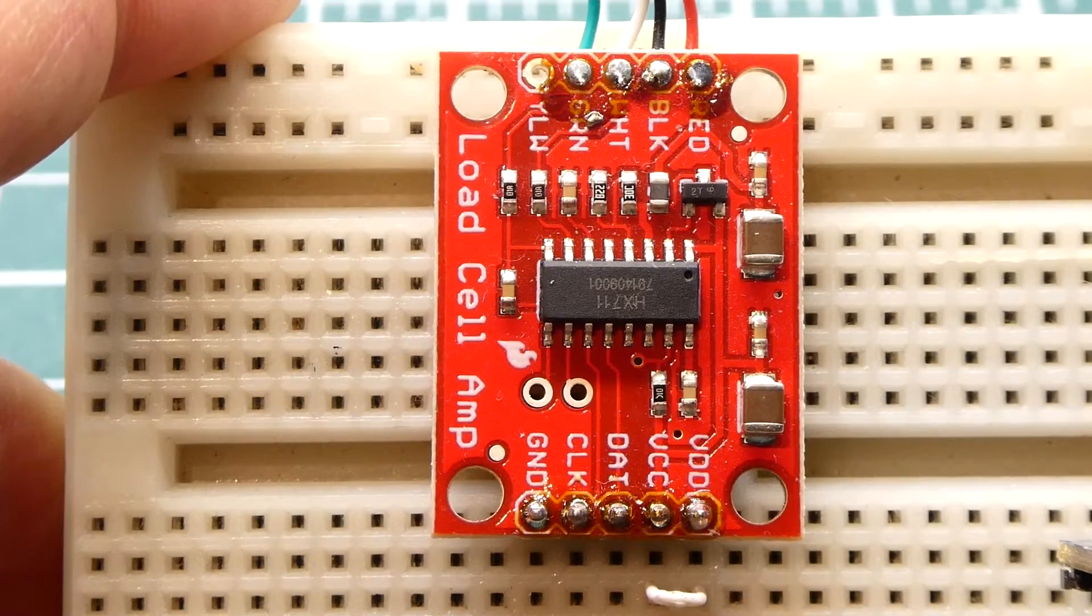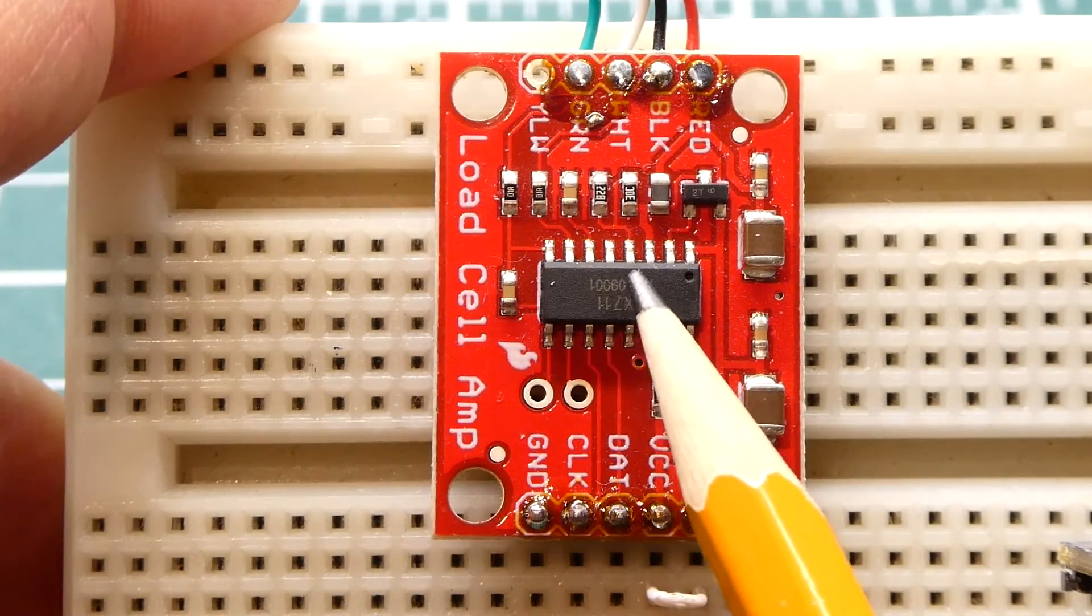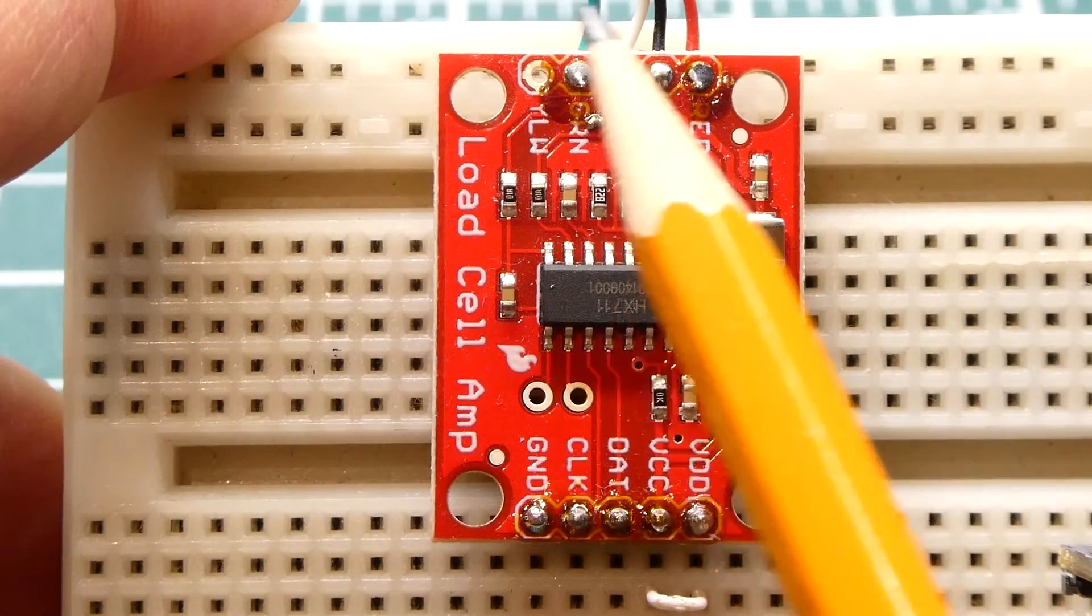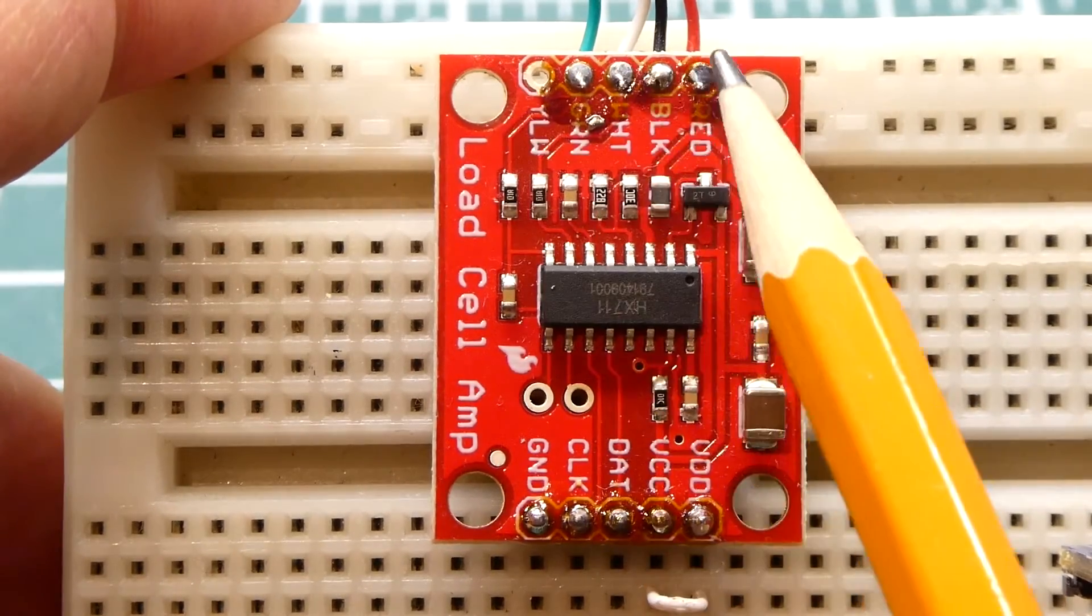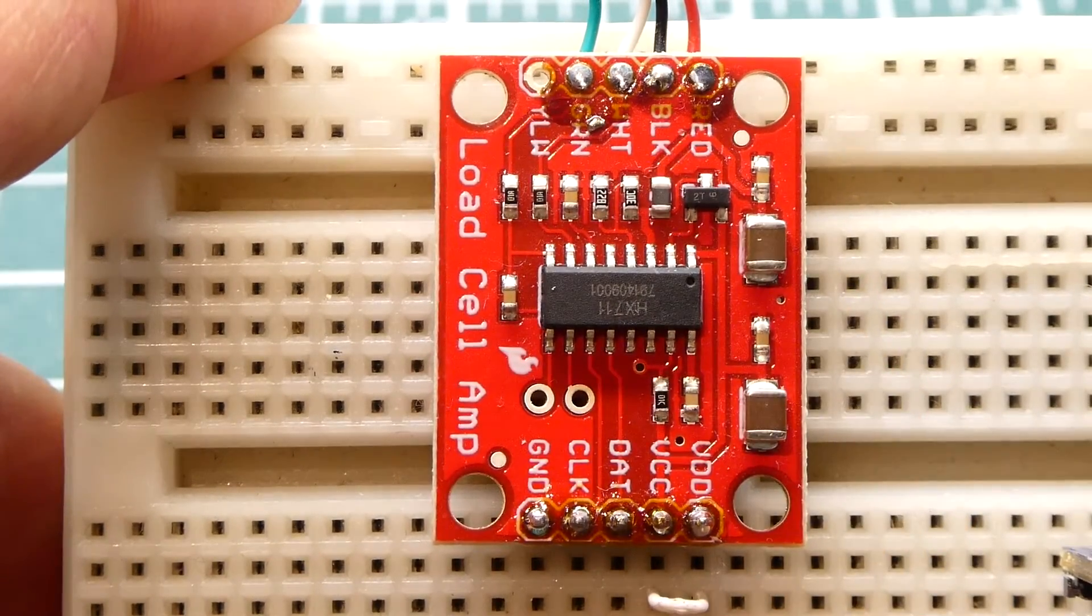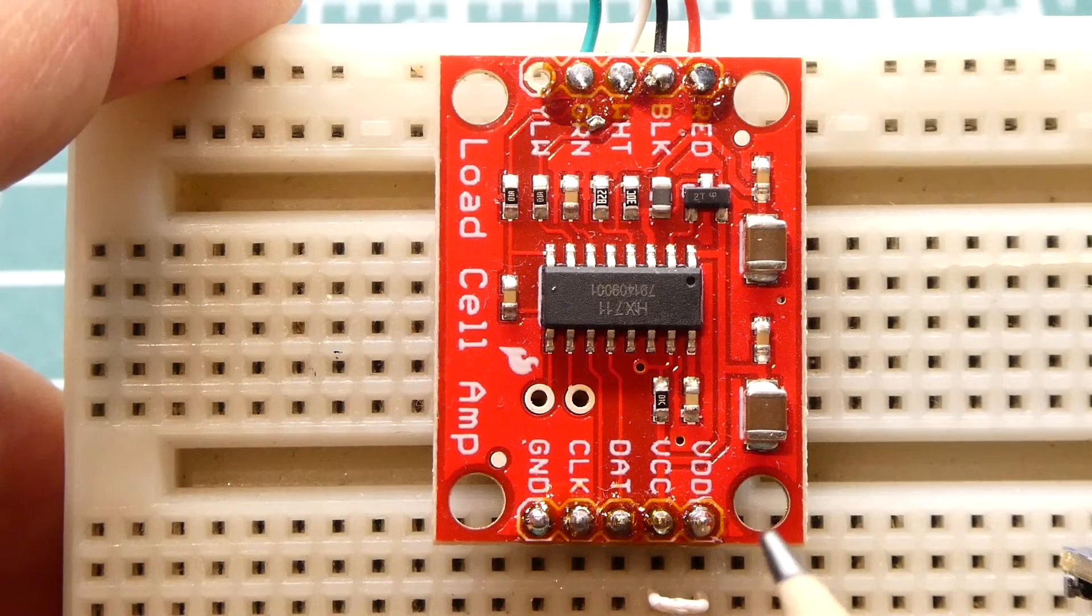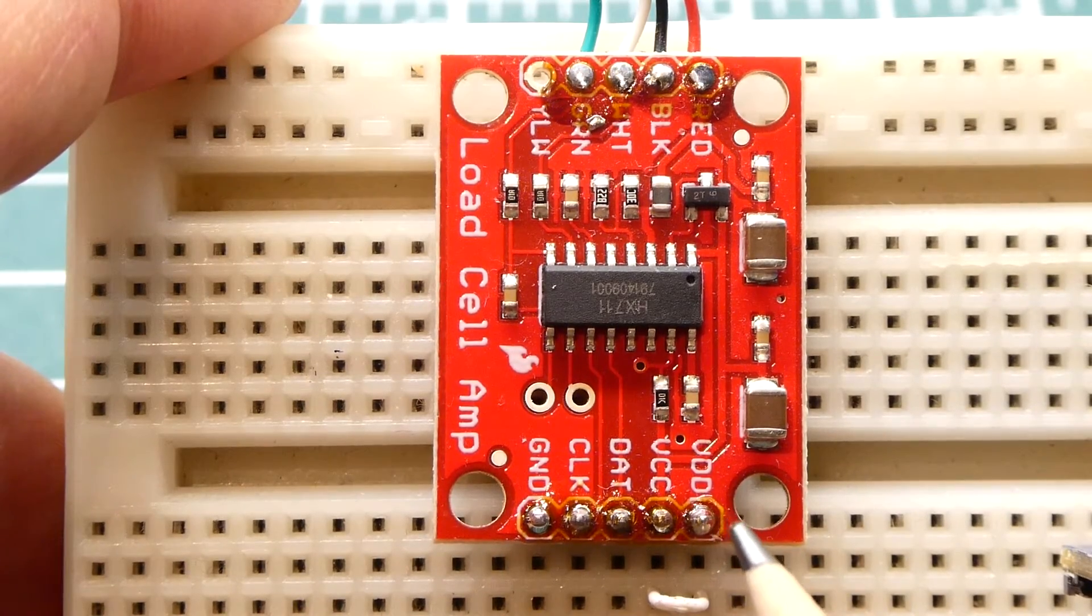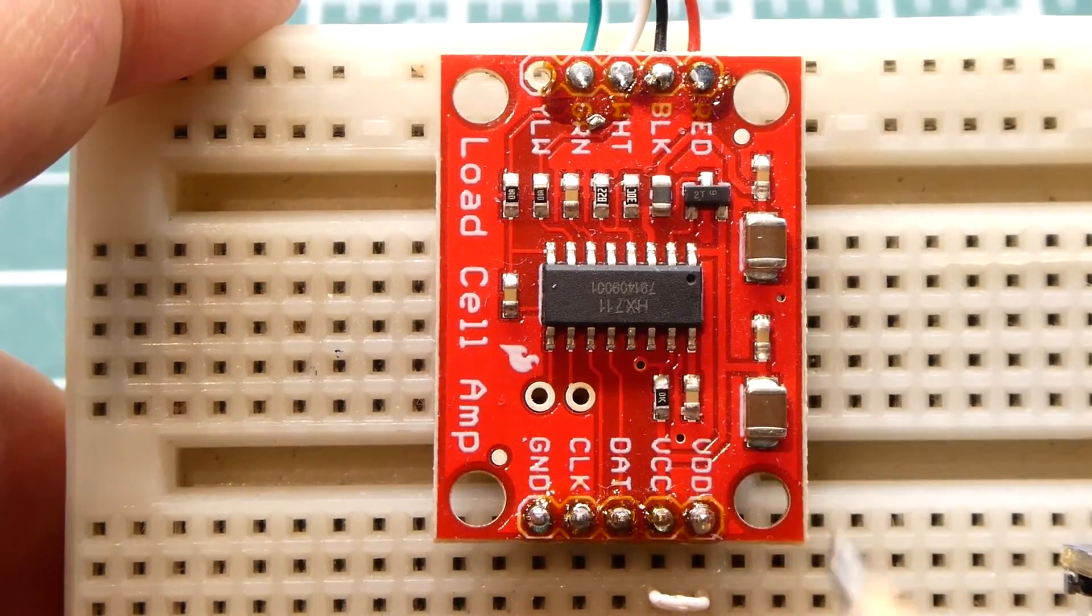Okay, here's my load cell amplifier that has my HX711 chip which you can see in the middle. Now the four pins on the top, those are the four wires coming in from the load cell. On the very bottom we have some pins and the very right is VDD, that's powering the chip which is 3.3 volts.